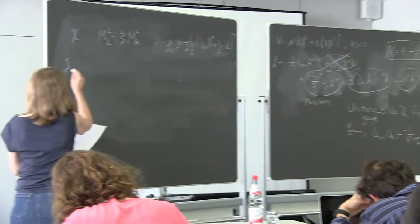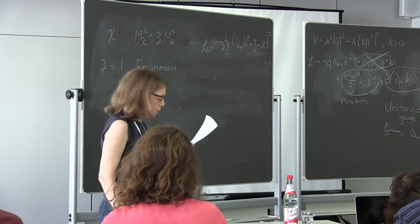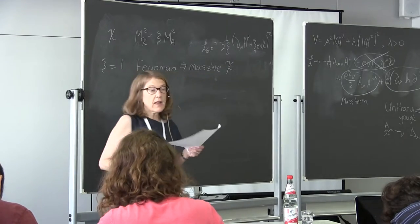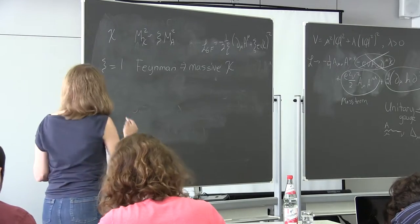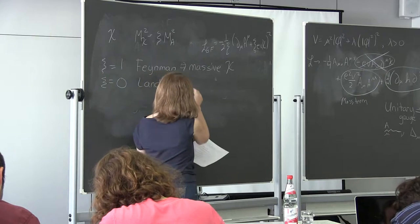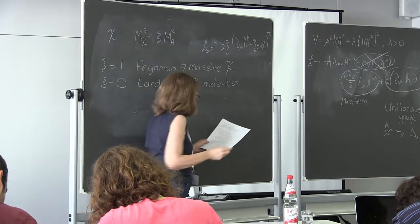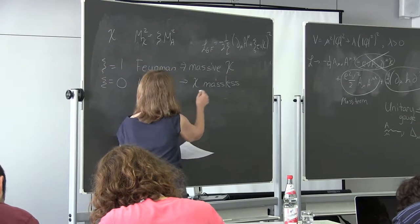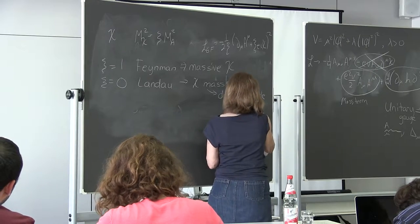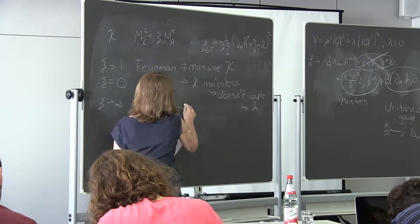With ξ = 1, it's Feynman gauge — the easiest thing to calculate in, but it has this massive Goldstone boson, so when I do calculations I have to include the Goldstone boson. With ξ = 0, it's Landau gauge — χ is massless and doesn't couple to H, which is nice. As ξ goes to infinity, it's unitary gauge — no Goldstones.